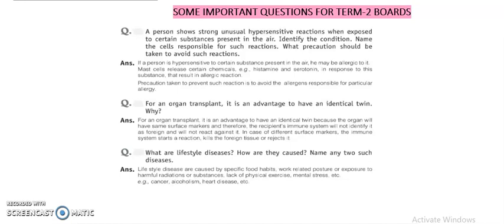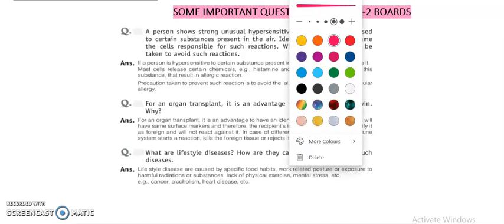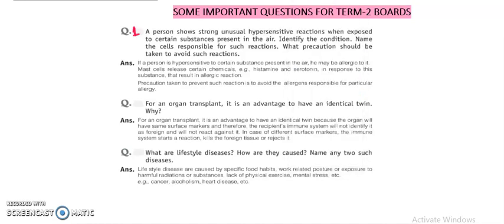We are starting with question number 1. A person shows strong, unusual hypersensitive reactions when exposed to certain substances present in the air. Identify the condition and name the cells responsible for such reactions. In this question, hypersensitive reaction is the key word and remember whenever they talk about hypersensitive reaction, quickly relate that they are talking about allergy.